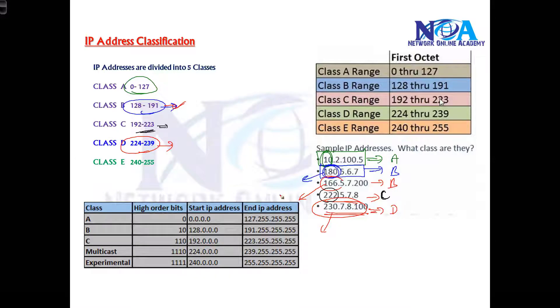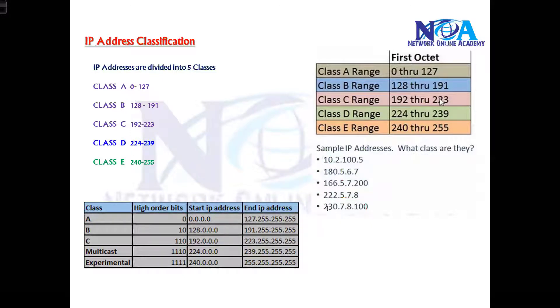So only see the first portion. So if you see the range here, the range is based on the first portion only. So if the first portion is in this range, you can see the remaining three portions can be anything from 0 to 255. So that doesn't make any difference. Only see the first octet. So whenever we see any IP address, the first thing we should be in a position to identify which class that IP address belongs to.